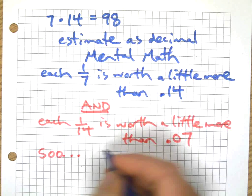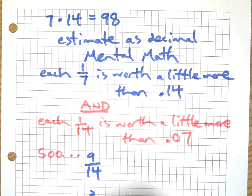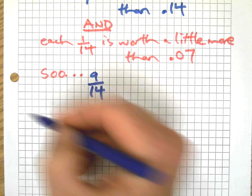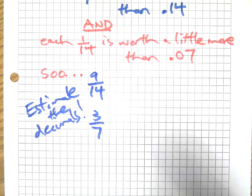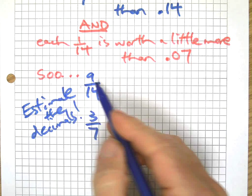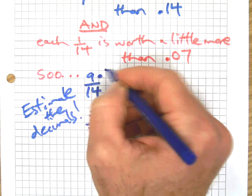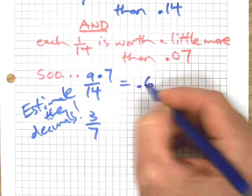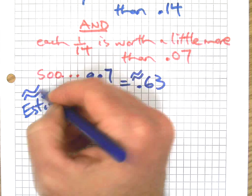I'm going to give you a chance to do a couple of problems here. What is nine-fourteenths and what is three-sevenths? Estimate the decimals mentally, no calculators. Each fourteenth is worth a little more than 7 hundredths, so that's about 63 hundredths, because we're estimating.